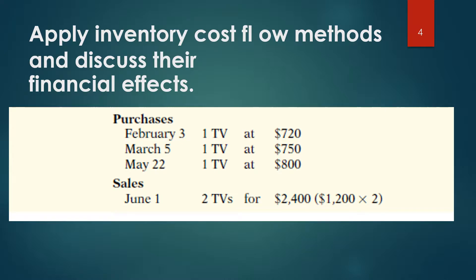Applying inventory cost flow methods: assume that Krivet's TV company purchases three identical 50-inch TVs on different dates at costs of $720, $750, and $800. During the year, Krivet's sold two sets at $1,200 each. These facts are summarized in Illustration 6-3. Cost of goods sold will differ depending on which two TVs the company sold.